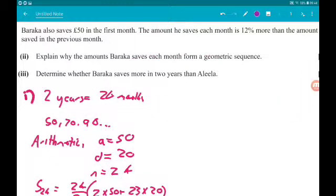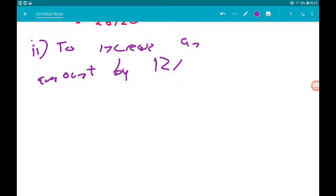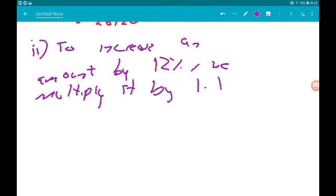Okay, then we're told Baraka also saves £50 in the first month. The amount Baraka saves then increases by 12% each month. Part two. Part two wants us to explain why the amounts Baraka saves form a geometric sequence. So, to increase an amount by 12%, we multiply it by 1.12.